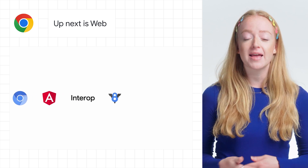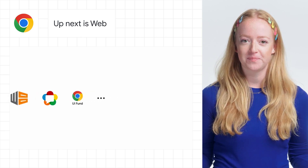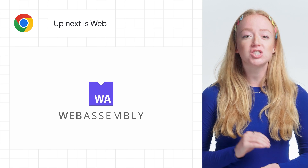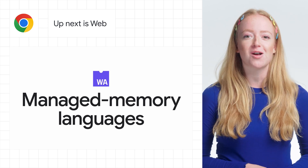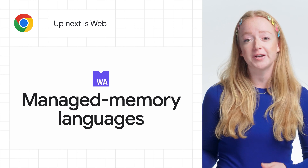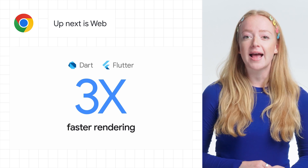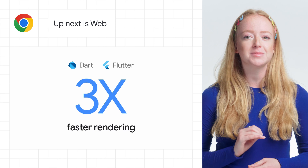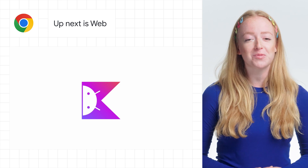Up next is web. With Google's contributions to Chromium, Angular, Interop, and many other efforts, we want to keep moving the web forward. WASM now supports managed memory languages like Kotlin and Dart, extending its benefits of reaching new customers on the web with native performance while reusing existing code to Android and Flutter developers. Thanks to some early work by JetBrains, Kotlin also runs on WASM.